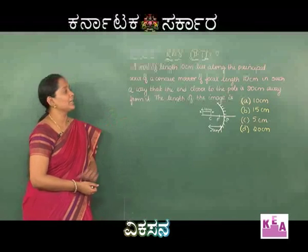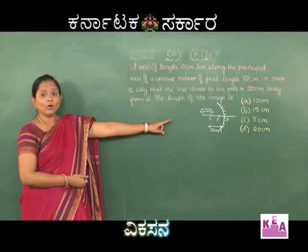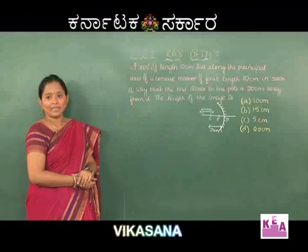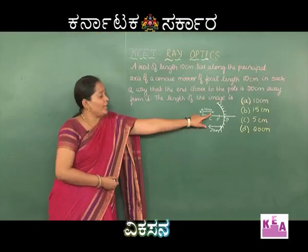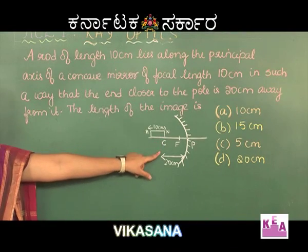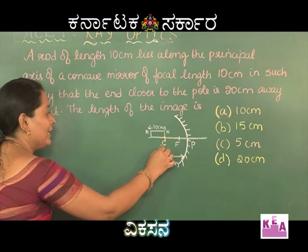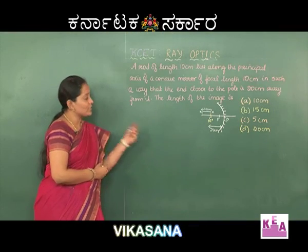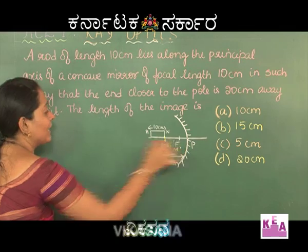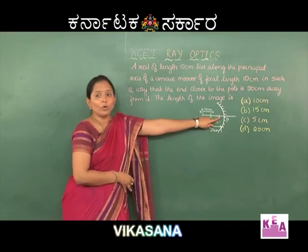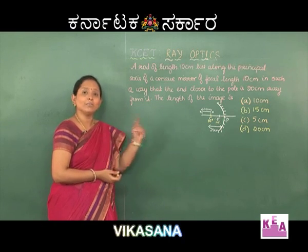Let us analyze the sum. We have a concave mirror of focal length 10 centimeters and a rod of length 10 centimeters placed along the principal axis. The two edges of the rod are marked as M and N. Point N, one end of the rod, is placed at C, so its image is also formed at C - marked as N′. The image of point M, placed beyond C, will be formed between C and F, giving us M′. The total distance of M from the pole is 30 centimeters, taken as the object distance.